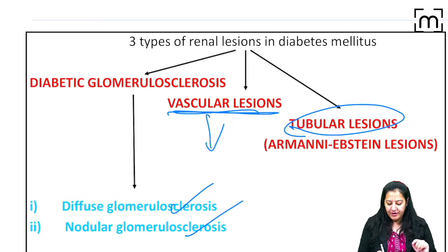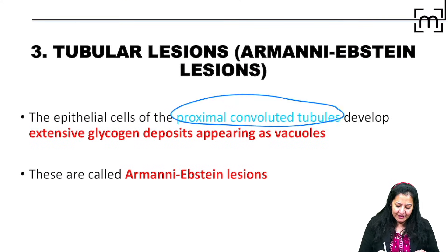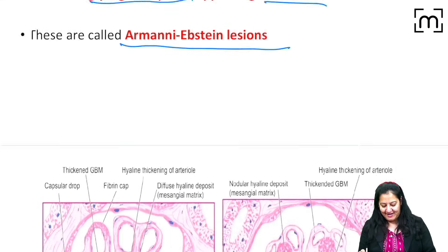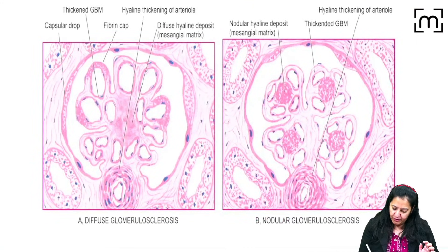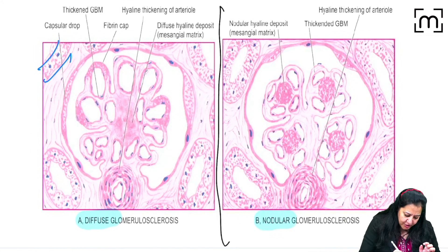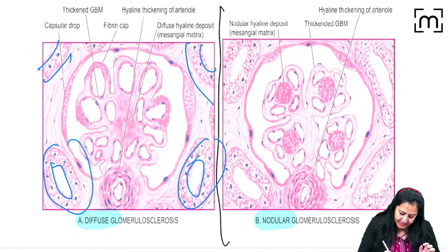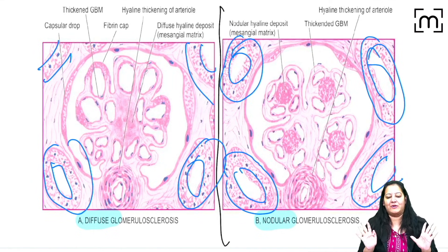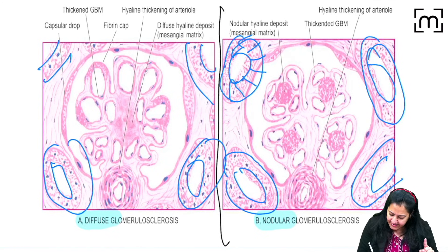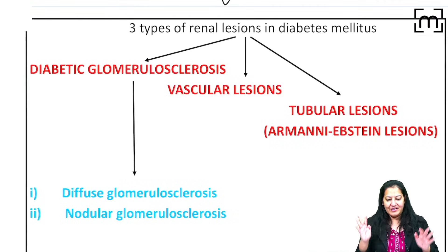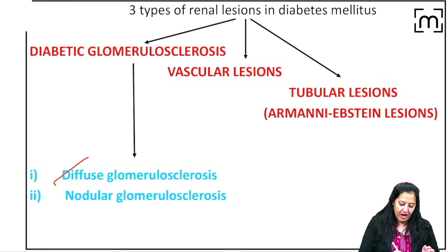For tubular lesions, in the PCT, glycogen is deposited and is seen in the form of vacuoles inside the cells of the tubules. This is common to both diffuse and nodular types. These vacuoles of glycogen in the tubules are known as the Armani-Epstein lesion.